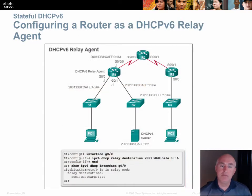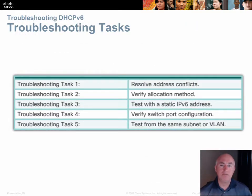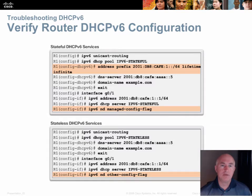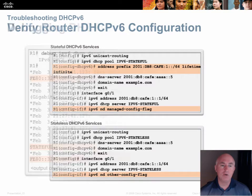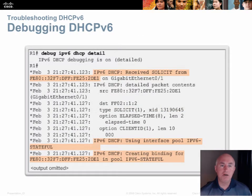With IPv6, DHCP relay works the same way as IPv4 with a single command: 'ipv6 dhcp relay destination' followed by the DHCP server's IP address. Put this on the G0/0 interface of Router 1, just like IPv4, and it directs traffic to the DHCPv6 server. For troubleshooting, use the same show commands and debug tools discussed earlier. You can also use an access list with debug for DHCPv6.